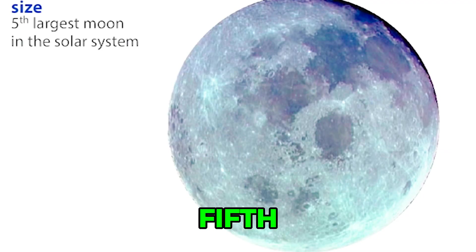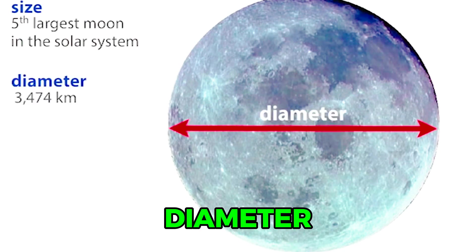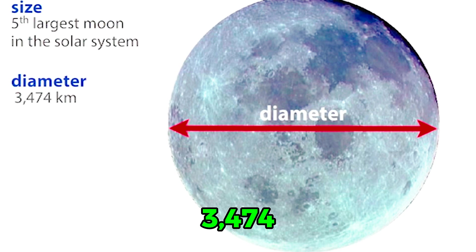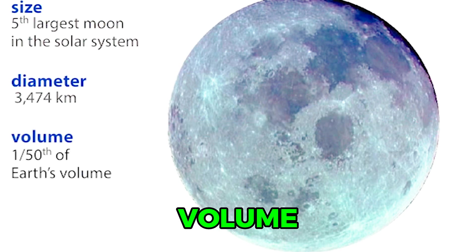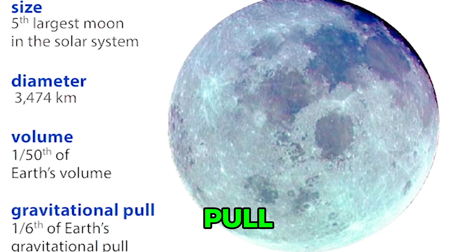The Moon is the fifth largest known Moon in the Solar System. Its diameter is 3,474 kilometers. The Moon's volume is about one-fiftieth that of the Earth. Its gravitational pull is about one-sixth that of the Earth.